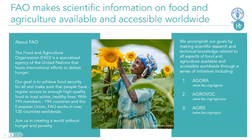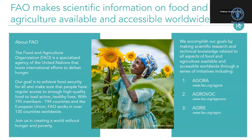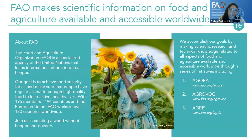Today I wanted to start off with a little more information about FAO. The Food and Agriculture Organization, or FAO, is a specialized agency of the United Nations that leads international efforts to defeat hunger. Our goal is to achieve food security for all and make sure that people have regular access to enough high-quality food to lead active, healthy lives. Currently FAO works in over 130 countries worldwide. We accomplish our goals by making scientific research and technical knowledge related to all aspects of food and agriculture available worldwide through a series of initiatives, including Agora, AgriVoc, and Agris.